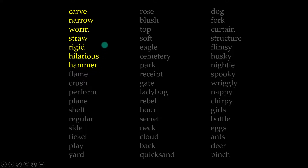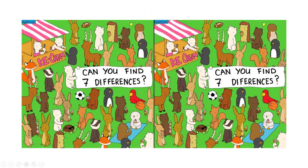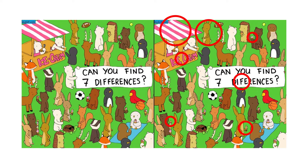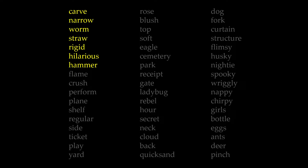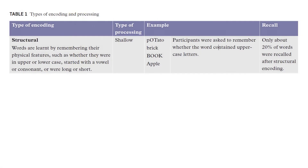So we're going to use the letter R as a common thread to bind all these words together. One more time: carve, narrow, worm, straw, rigid, hilarious, and hammer. Hopefully you've tried to commit that to memory, and before I get you to repeat it back to me, here's a little activity to do for 15 seconds. Chances are you got some of those words, maybe most of them, but it was probably a bit hard to recall. And that's because the type of processing used to memorize those words would be best described as shallow.